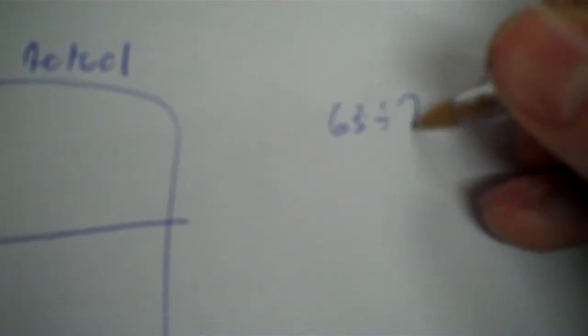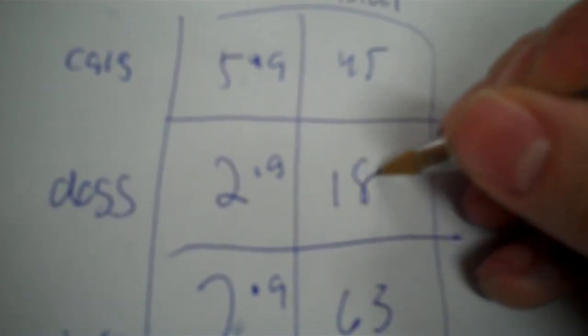63 animals for adoption. Well, that's your total. That's cats with the dogs. So, 7 times what? 63. Well, it's 9. But, if you don't know, divide 63 by 7. 9. 5 times 9 is 45. 2 times 9 is 18. So, 45 cats, 18 dogs. All right.